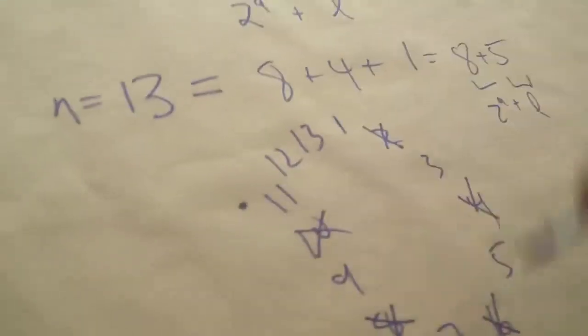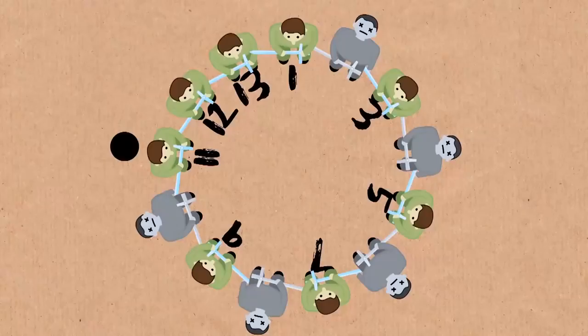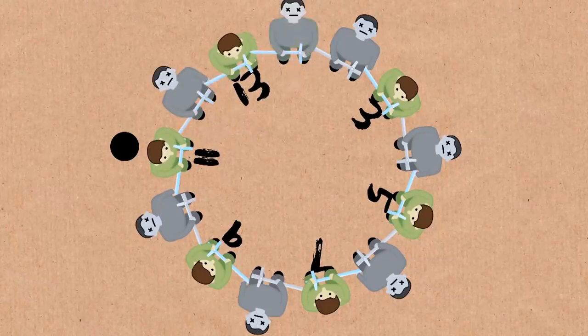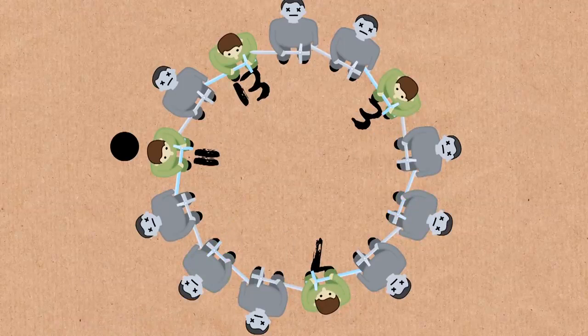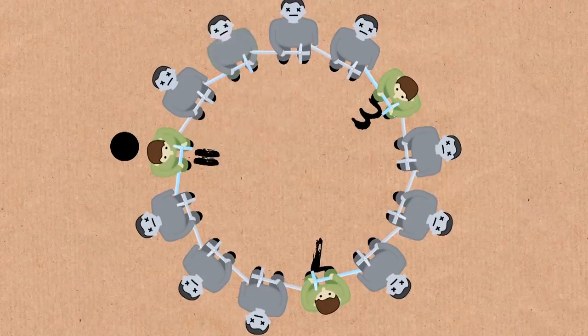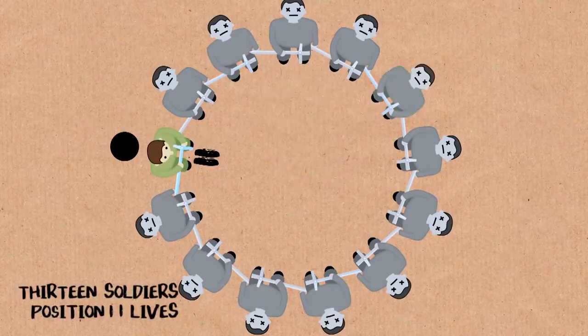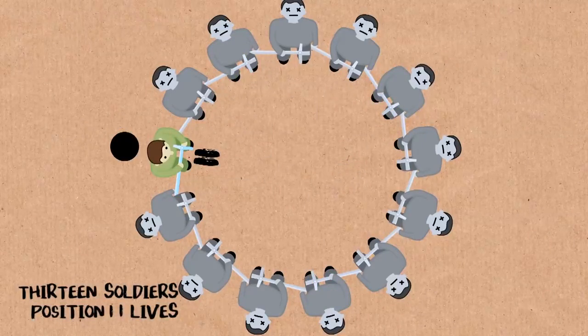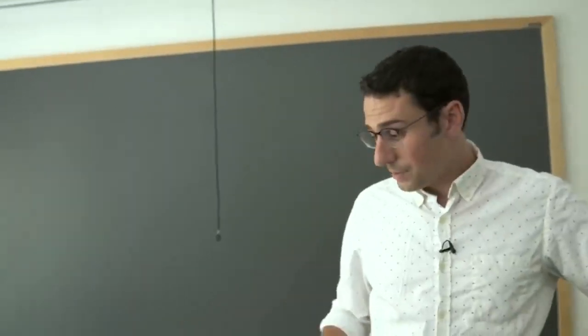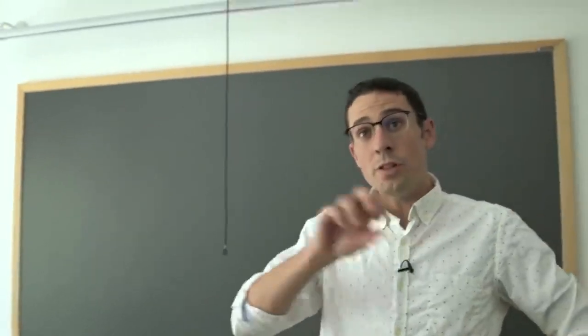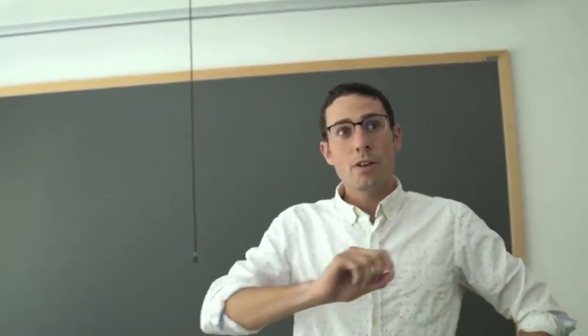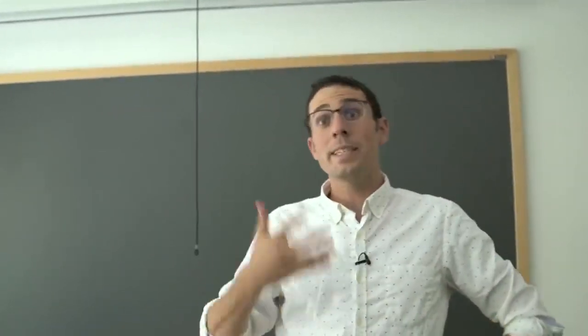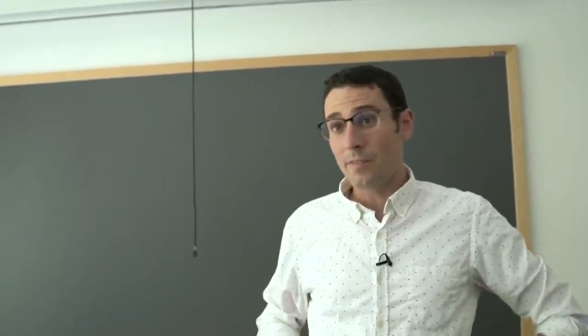So now if we go from here, I claim that 11 is going to win. It's going to be 11 kills 12, 13 kills one, three kills five, seven kills nine. Back to 11. And now there's only four people left, 11 kills 13, three kills seven. Back to 11, two people, 11 wins. And so this is really the key to the final answer, which is if you've written your number as two to the a plus l, after l steps, whoever's turn it is is going to win because it's going to be their turn and there will be a power of two left.